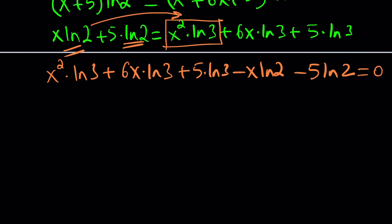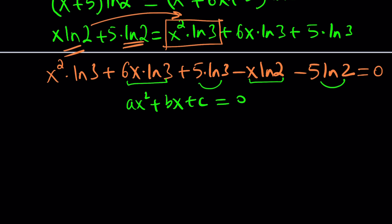Now we have some like terms. These two both have x, and these are like terms too because they are constants. So you need to rearrange the terms to get a full quadratic. Your quadratic is supposed to look like ax squared plus bx plus c, because that's what quadratics look like. A, B, C are coefficients, and based upon those, you can actually find the solutions by using the quadratic formula.